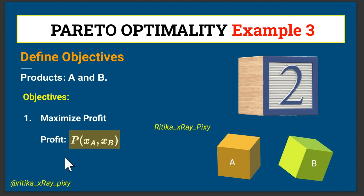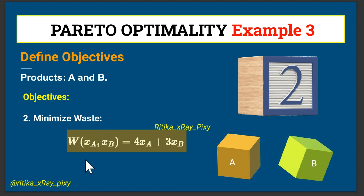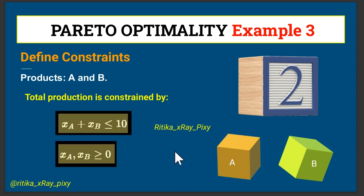The first objective is to maximize profit: f1 = 20·xA + 30·xV, where one unit of A gives $20 and one unit of V gives $30. The second objective is to minimize environmental impact: f2 = 4·xA + 3·xV, where one unit of A generates 4 units of waste and one unit of V generates 3 units of waste. The factory has limited resources, so the constraint is xA + xV ≤ 10, with xA, xV ≥ 0.